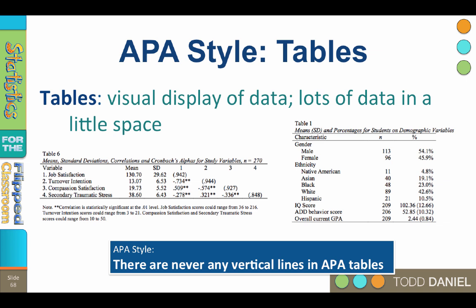The lines on the table are called rules. At a minimum, you need one rule across the width of the top of the table, one rule across the width of the bottom of the table, and typically one rule across the width of the first row of the table. There are never any vertical lines in APA style tables.